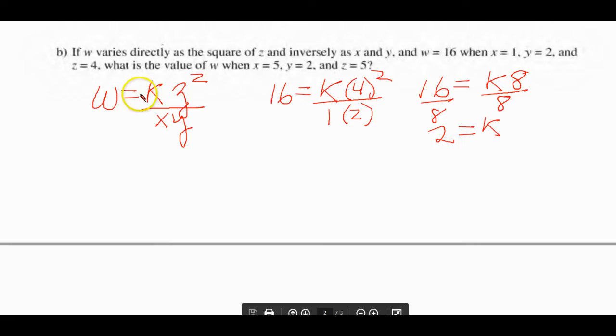Now that we know that K equals 2 here, we start to substitute again. We want to find what W is. K is 2. Our new Z is 5 that we're going to square. And our new X is 5, and our new Y is 2. What do we get? This is 25 times 2 is 50. And this is 10. What is 50 divided by 10? It is 5. And that's the answer to 4B.